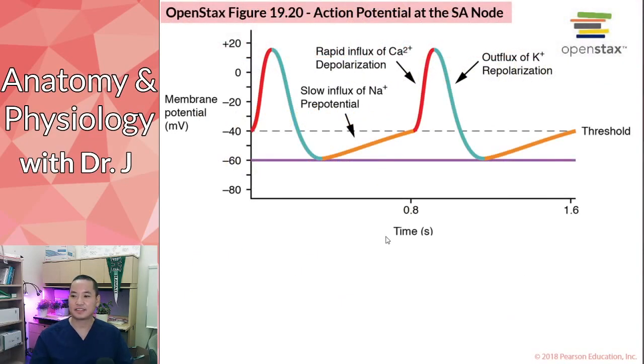Now, what we have here is action potentials and things that pacemaker cells can contract by themselves. And remember, like we saw with those beating hearts, we saw with that Petri dish full of, or these wells full of beating cells. These pacemaker cells, they can initiate their own contraction.